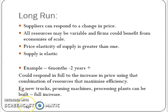Long-run elasticity of supply means that at any given point in time, suppliers can respond to a change in price. All resources are variable and are no longer fixed. Firms can definitely benefit from economies of scale, and supply is now elastic, meaning our supply curve is relatively horizontal.